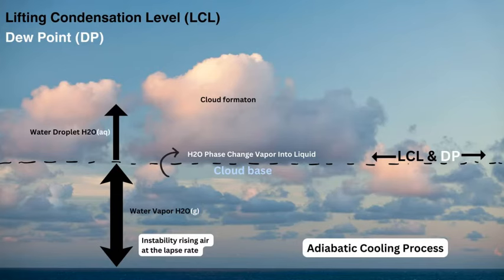A lot of cloud types — whether low, medium, or high clouds — are going to have a base which is generally flat, because that is showing you where the water vapor goes through a phase change and condenses into liquid water from the gaseous state. This is due to the temperature at which that occurs, which is called the dew point.